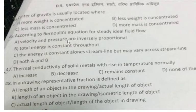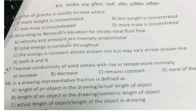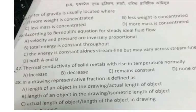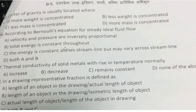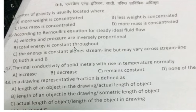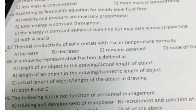Question 46: According to Bernoulli's equation for steady ideal fluid flow, velocity and pressure energy are inversely proportional. The correct answer is option B: total energy remains constant. Total energy remains constant along the streamline. The energy is constant along the streamline.